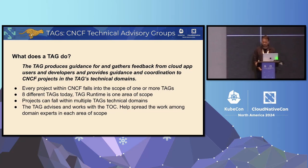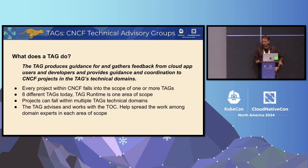So what does a TAG really do? If you look at the last slide, what's really interesting is that every project in that landscape falls within one of the TAGs' scopes. There are eight different TAGs today, and a project may fall within one or more of those TAGs. It's about spreading the work across multiple people and being able to advise for projects and really help those projects as well.